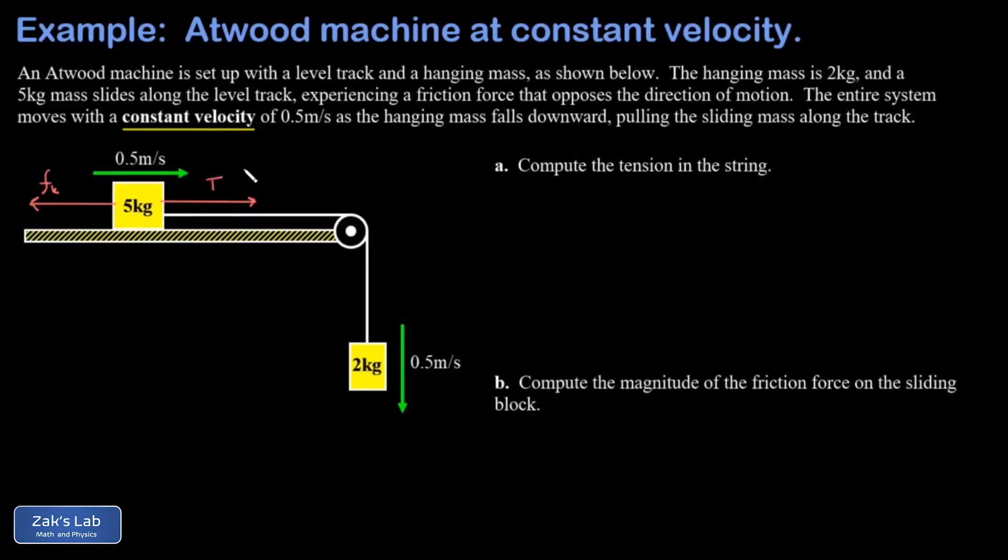For the five kilogram block, the vertical forces cancel—we're not interested in them. There's the weight pointing down and the normal force pointing up just to keep the block moving horizontally on the track. For the two kilogram block, we have its weight vector pointing down.